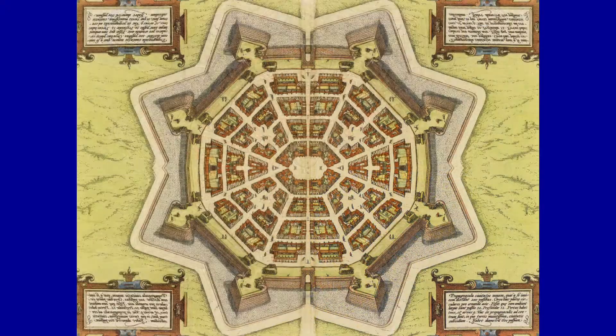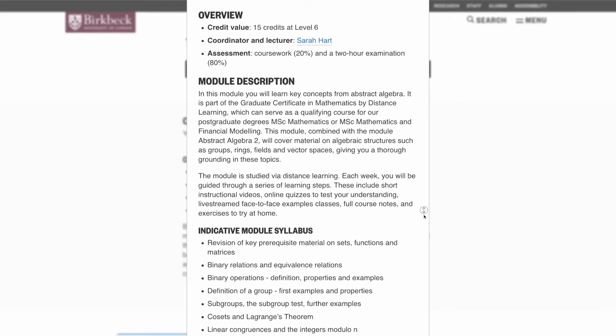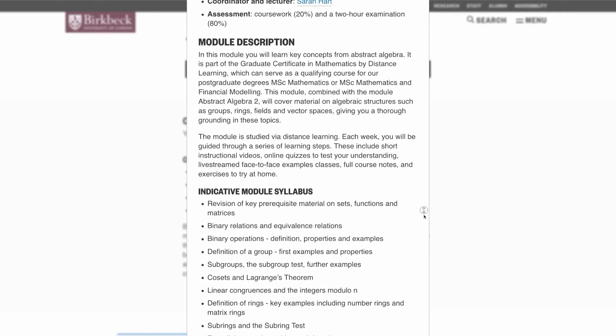That's about half of what you would study on the Graduate Certificate program in modules called Abstract Algebra 1 and Abstract Algebra 2. You can find out more about those in the online prospectus and we'll put some links below this video.